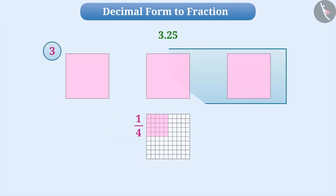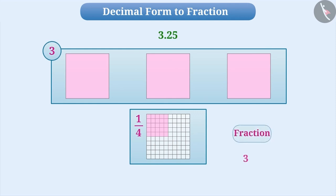Therefore, 3 whole and 1 fourth parts are represented in fractional form as 3 and 1 by 4th. Thus, the fractional form of decimal number 3.25 is 3 and 1 by 4th.